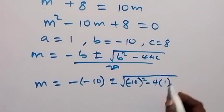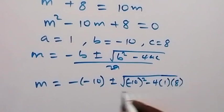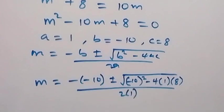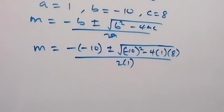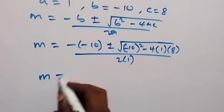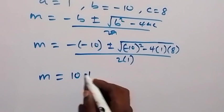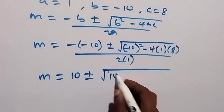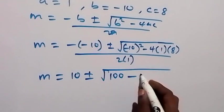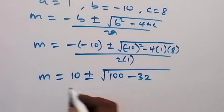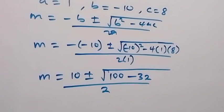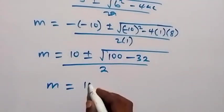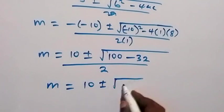Solving this further, M equals 10 plus or minus square root of 100 minus 32, over 2. This gives M equals 10 plus or minus square root of 68, over 2.